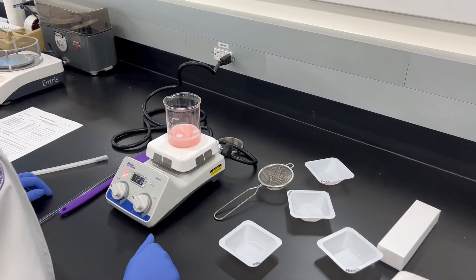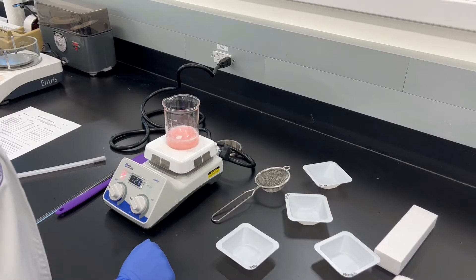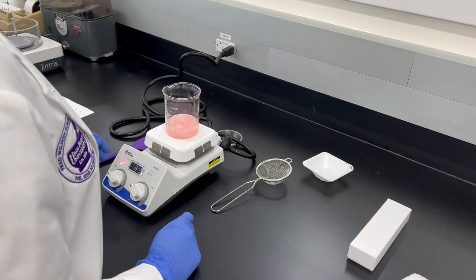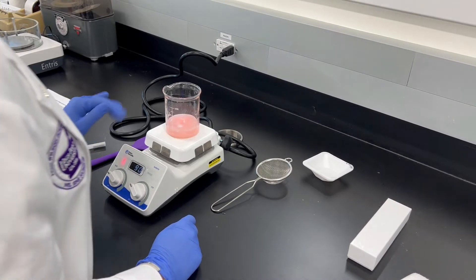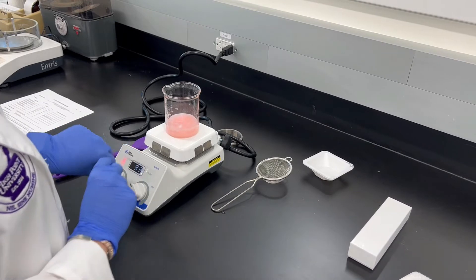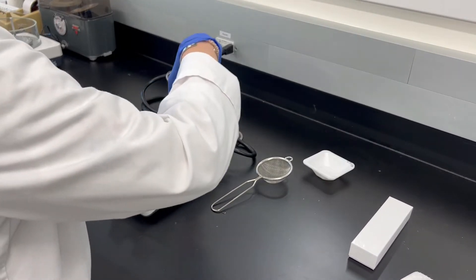Now we're just going to keep stirring this until all the powders are dissolved. Once they get dissolved, then we're going to turn off the hot plate. So once you get all of the powders all mixed together and there's no big particles left in there, you can go ahead and turn off your heat, turn off your stir bar, and then you can remove this.